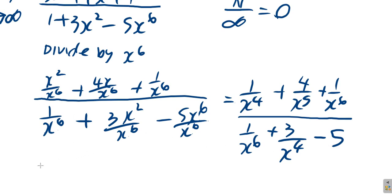Let's substitute infinity into it now. 1 over infinity to the 4 is just infinity, infinity large number, plus 4 over an infinity large number to the 5 is still an infinity large number.